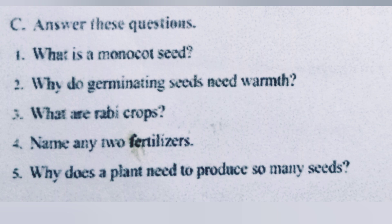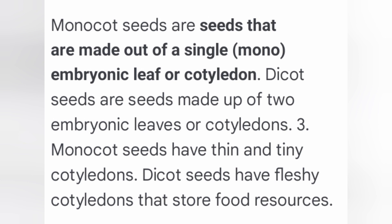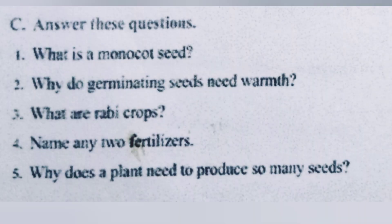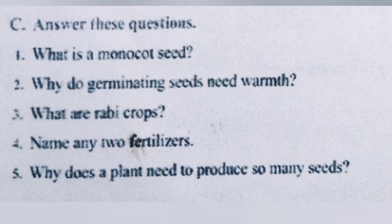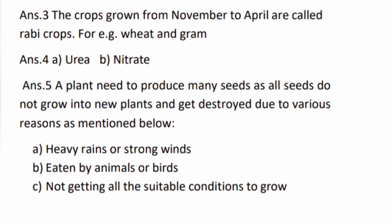Part C: answer these questions. First: what is a monocot seed? Answer: monocot seeds are seeds that are made out of a single embryonic leaf or cotyledon. Second: why do germinating seeds need warmth? Answer: warmth is required for the enzymes to carry out respiration and cell division. Third: what are rabi crops? Answer: the crops grown from November to April are called rabi crops — for example, wheat and gram.